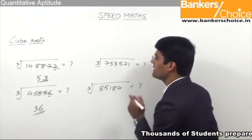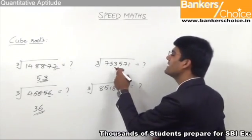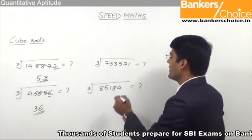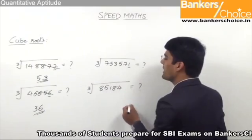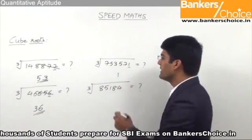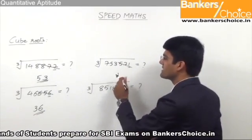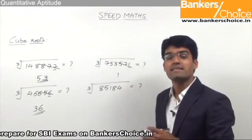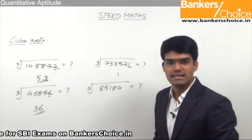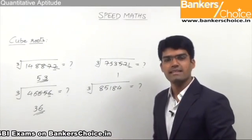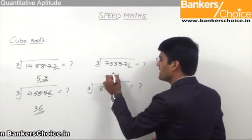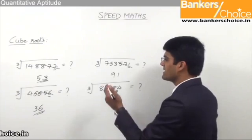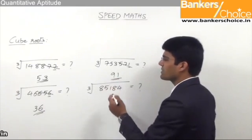The next one is the cube root of 753571. When a number ends with 1, the cube root ends with 1. Leave the last three digits; less than 753 and a perfect cube is 729, which is 9 cubed. So 9 is in the tens place, giving the answer 91.